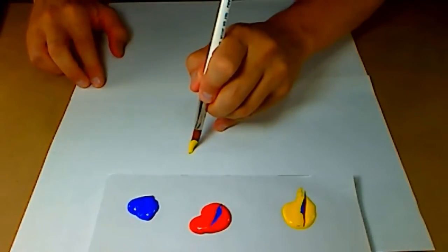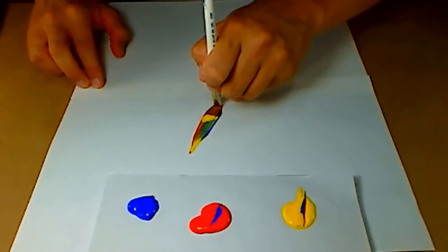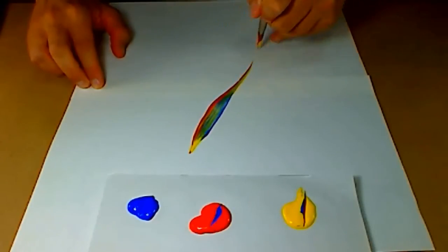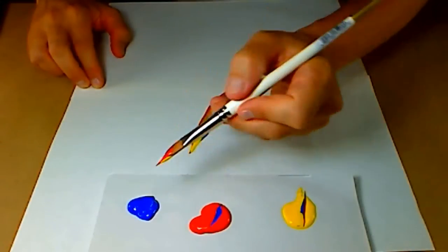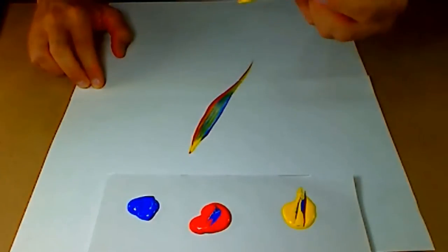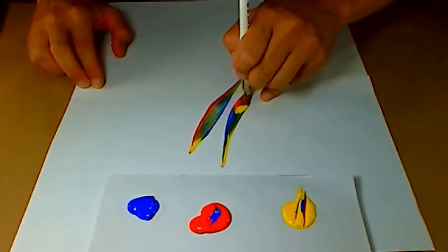Then place it on your surface. You can press, pull and lift to get nice blended strokes. When you're ready to do another stroke, just reload the brush in the same manner and you can create more strokes.